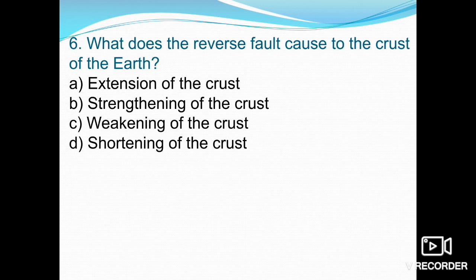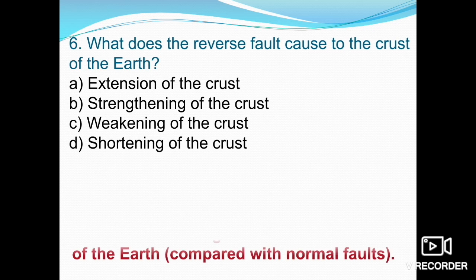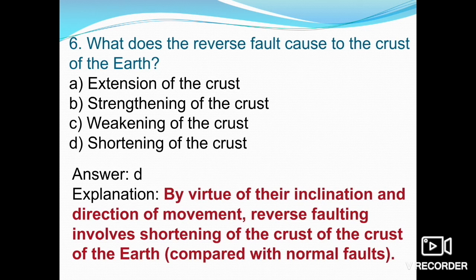The sixth question: what does the reverse fault cause to the earth's crust — extension, strengthening, weakening, or shortening? By virtue of their inclination and direction of movement, reverse faulting involves shortening of the earth's crust, compared to normal faulting which indicates lengthening of the crust. Option D, shortening of the crust, is the correct answer.